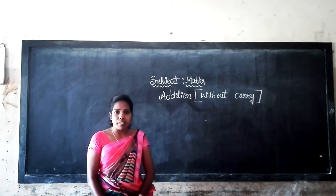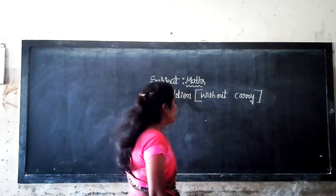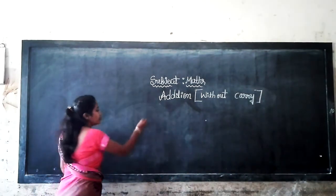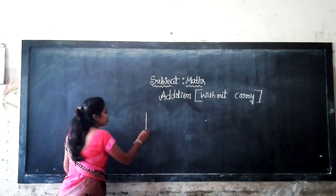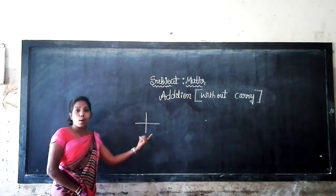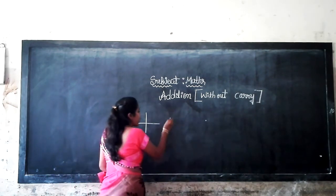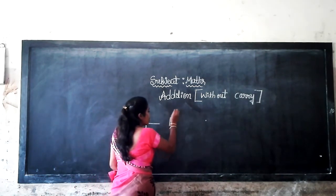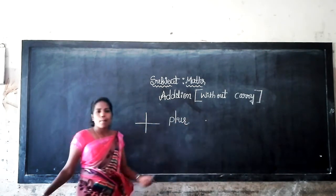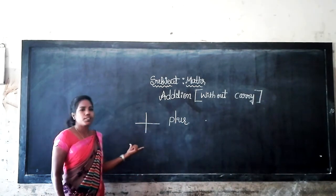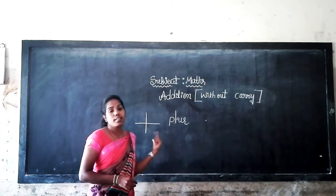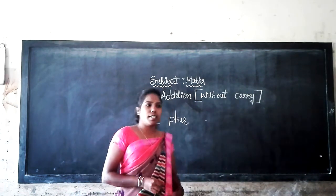How to add double digit numbers. Already you know what this symbol is — this is plus. It is called as plus, and it is the symbol of addition. What is it? It is the symbol of addition.